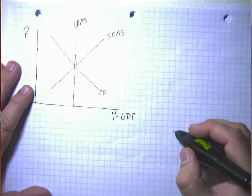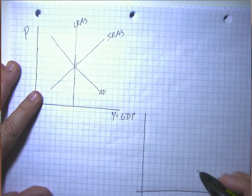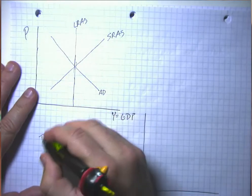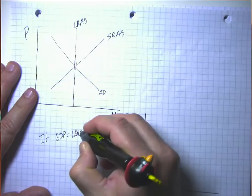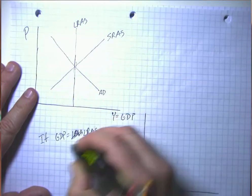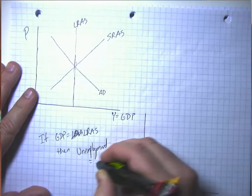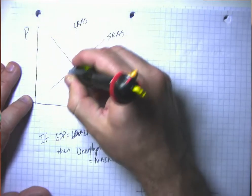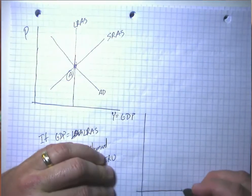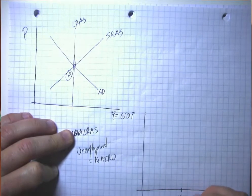And then we can think about, down in this corner, what's going on with the Phillips curve. So remember that if GDP equals long-run aggregate supply, then unemployment equals the natural rate or NARU. So this point A, our Goldilocks point here, corresponds to unemployment equal to its NARU.